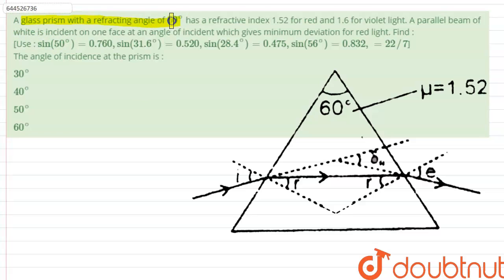A glass prism with a refracting angle of 60 degrees has a refractive index 1.52 for red and 1.6 for violet light. A parallel beam of white light is incident on one face at an angle of incidence which gives minimum deviation for red light.